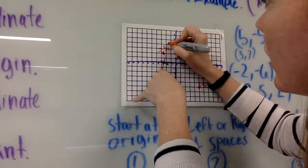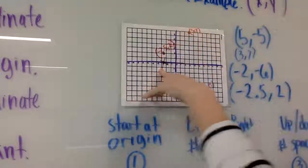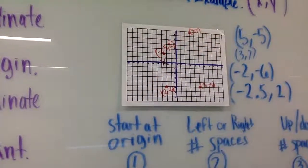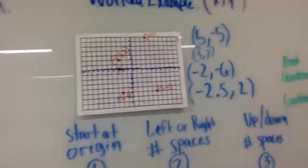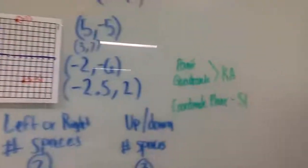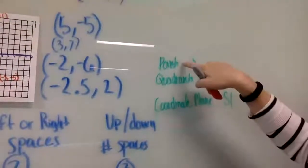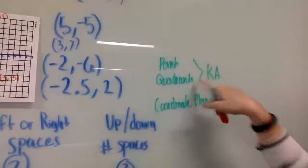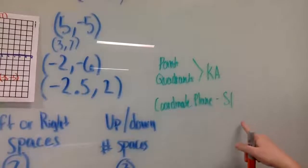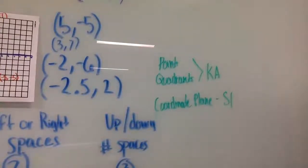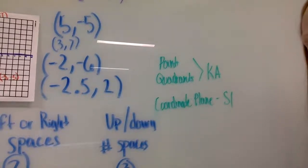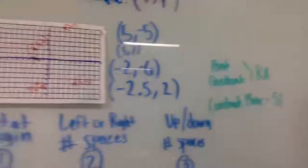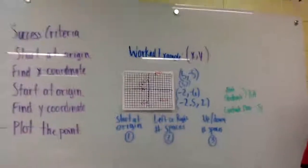You have two assignments on Khan Academy: plotting points on a coordinate plane, and the quadrants on a coordinate plane. You also have one Study Island assignment called coordinate plane. That was our coordinate plane lesson.